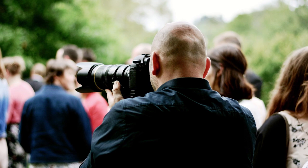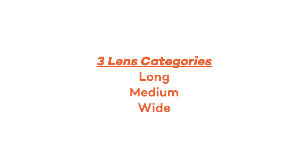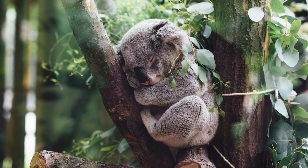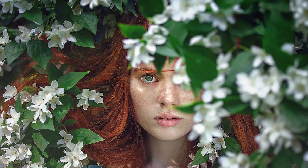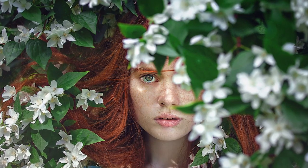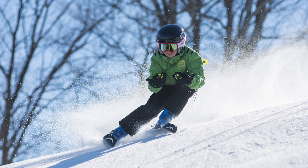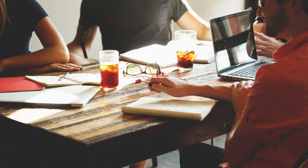When most people think of lenses, the default terms used are telephoto and zoom. I prefer to put lenses in three different categories: long, medium, and wide. A long lens is ideal for short depth of fields, product shots, and portraits where it will give an undistorted perspective, plus action shots for sports or wildlife.